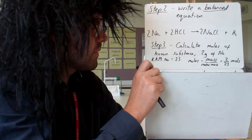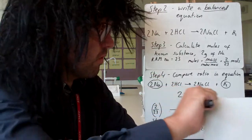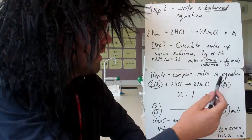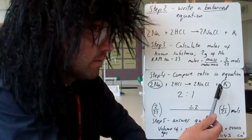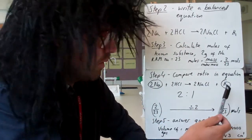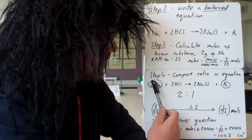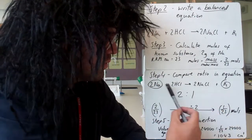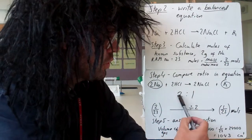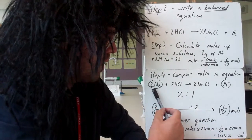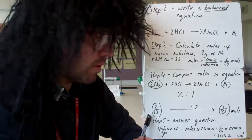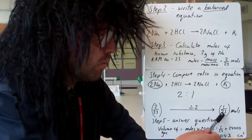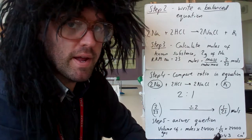Step four: compare the ratio in the equation. We're just looking at the sodium and hydrogen, because that's what we know about and that's what we want to work out. The other two don't matter. We've got 2 for every 1 of these, that's what has to be balanced correctly, 2 to 1. So for every 2 moles of sodium, I only make one mole of hydrogen, I make half the amount. So if I've got 2 over 23 moles of sodium, I'll make half the amount, 1 over 23 moles of H2.